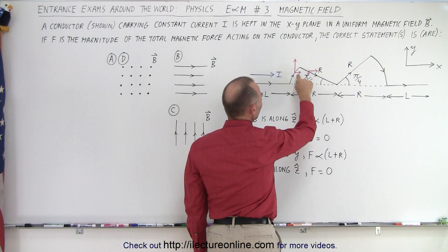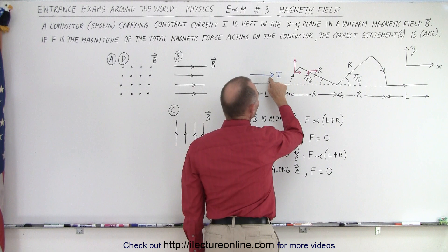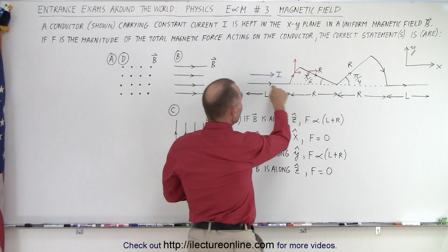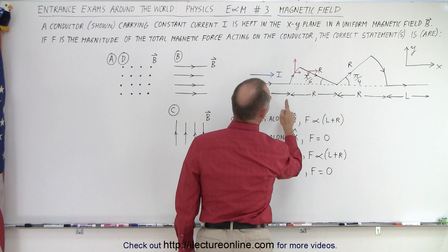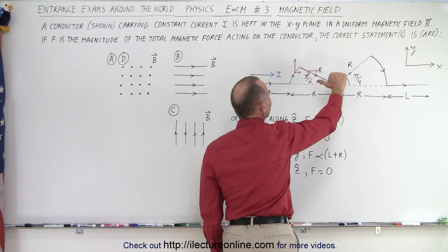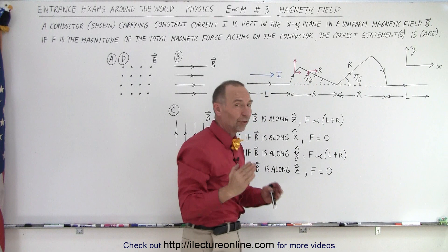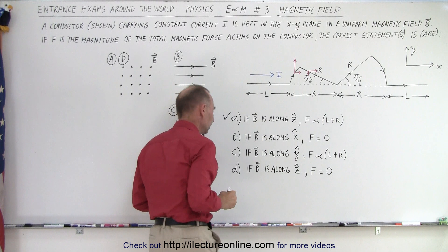When the current travels up and then down along the arc, the horizontal component acts the same as the straight sections. So the bigger R, the bigger the horizontal component, and the force is proportional to R. For the vertical component, as the current goes up the force is in one direction, but as it goes down the force is in the opposite direction — so the vertical components cancel each other out. Therefore it's L and R that matter, and the first statement is indeed true.